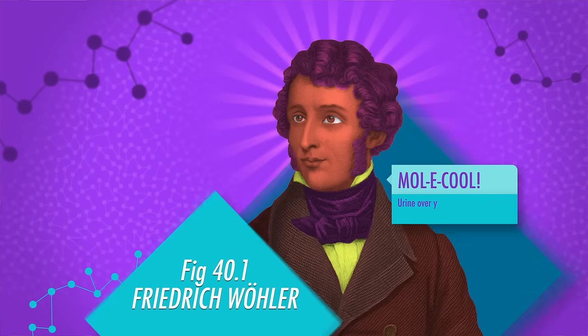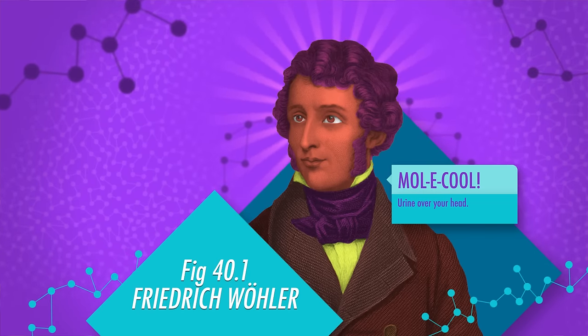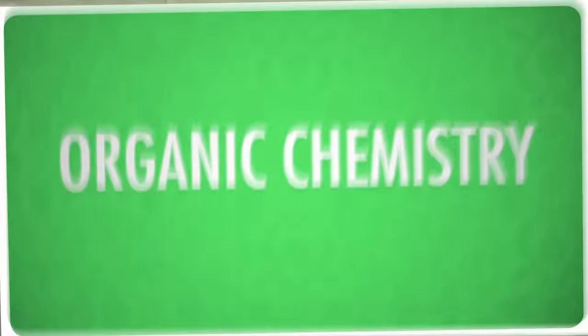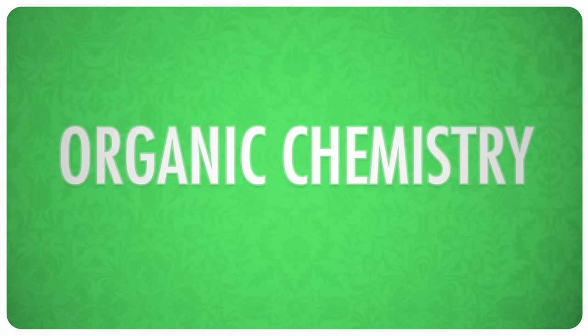Scientists back then considered biological molecules to be almost mystical in origin, until 1828, when German chemist Friedrich Wöhler discovered that urea, a component of urine, could be synthesized simply by heating ammonium cyanate, an inorganic compound. That proved biological molecules were just chemicals that could be created and manipulated in the lab. Suddenly, a new branch of chemistry was born: organic chemistry.